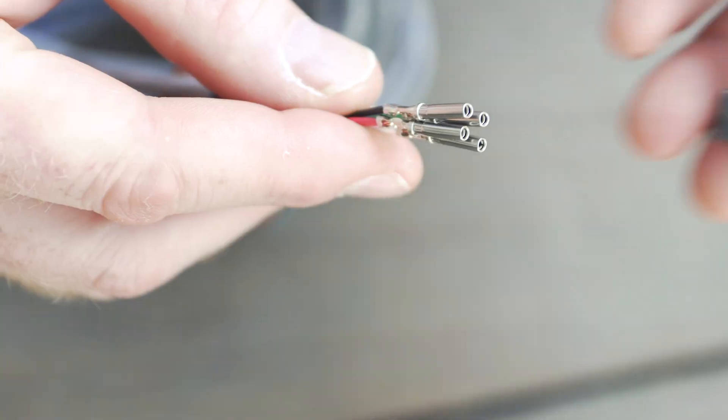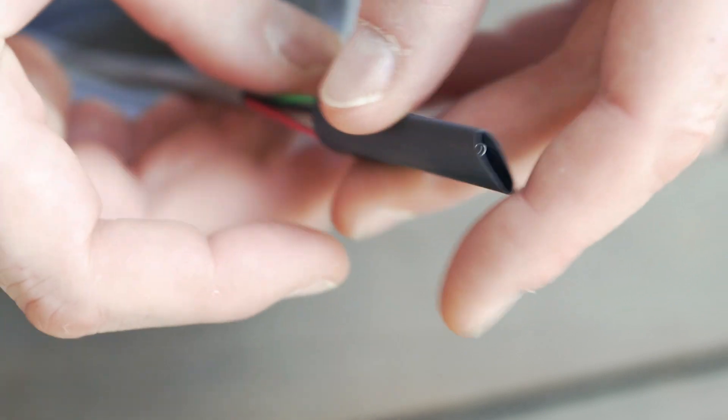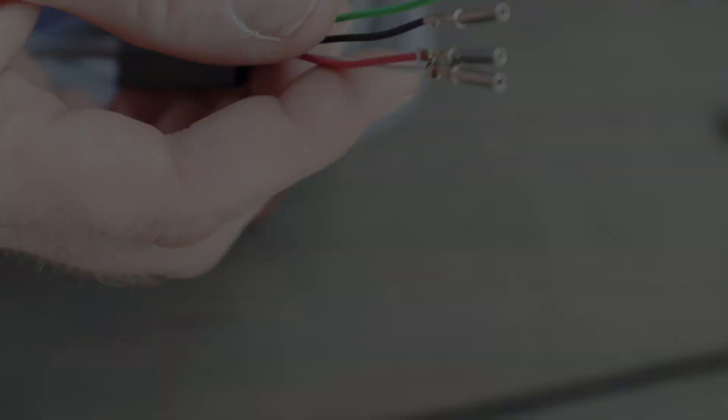In the kit there's a little baggie with the connector, a piece of heat shrink—you want to slide that over before you do anything—and a thing called a wedge lock.